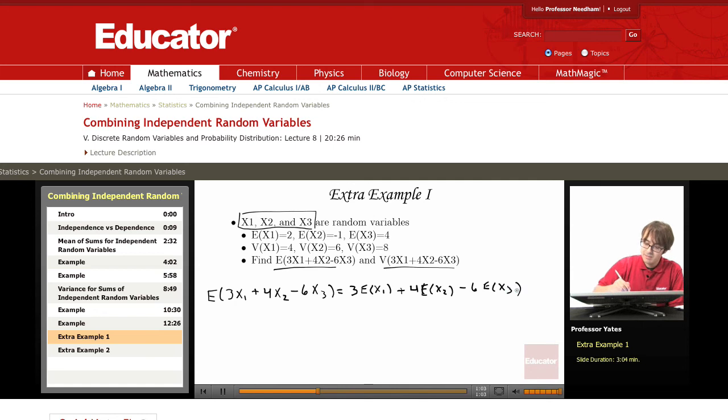Okay, well this is 3 times 2 plus 4 times negative 1 minus 6 times 4. So I get 6 minus 4 minus 24, and this should give me negative 22 for the mean.